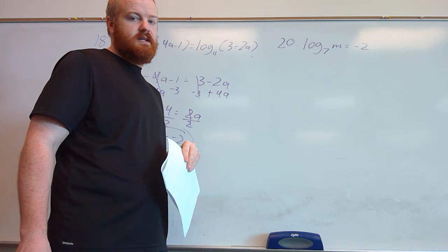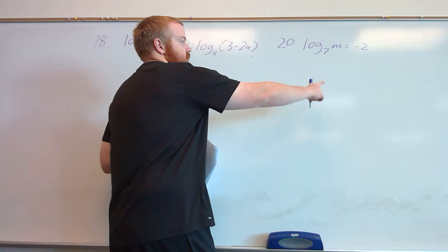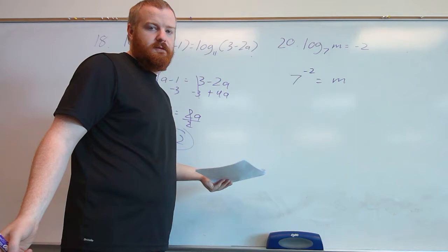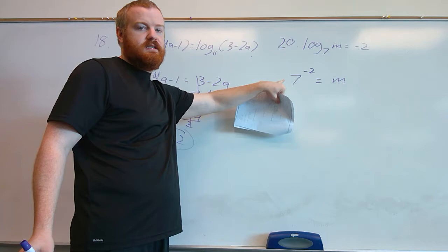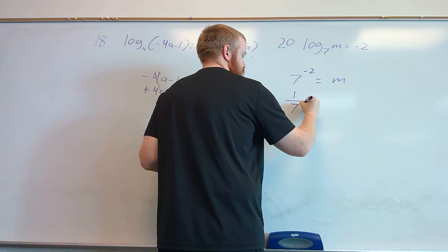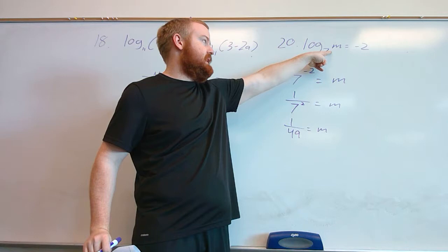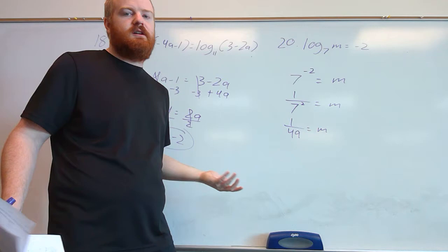For example 20, we have log of something equal to a number. We convert from log form to exponential form: the base is 7, raised to the power on the other side, which is negative 2, equals the inside of the log, which is m. A negative exponent means we take the reciprocal, so this becomes 1 over 7 squared equals m. Since 7 squared is 49, we get m equals 1 over 49. Since 1 over 49 is positive, our solution is good.